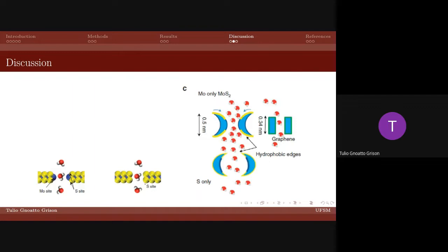The molybdenum, on the other hand, would be hydrophilic, so it would attract the molecules to the center of the pore, allowing aggressive flow through the membrane.